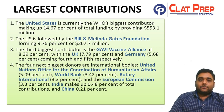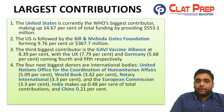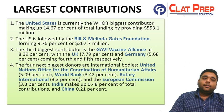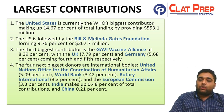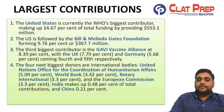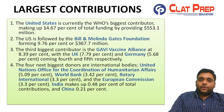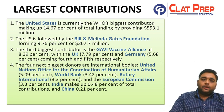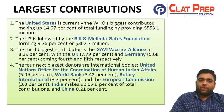The largest contributor to WHO is the US, making up 14.67% of total funding. The US is followed by an independent organization — the Bill and Melinda Gates Foundation — forming 9.76%. The third biggest contributor is the Gavi Vaccine Alliance, headquartered at Geneva, contributing 8.39%. Fourth is the UK, and fifth is Germany.